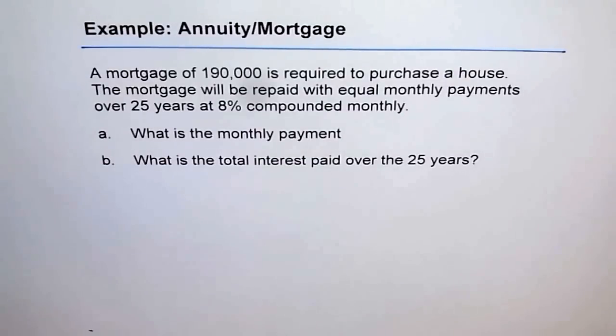Let's read the problem once again. It is always important to read your problem at least twice. A mortgage of 190,000 is required to purchase a house. The mortgage will be repaid with equal monthly payments over 25 years at 8% compounded monthly.